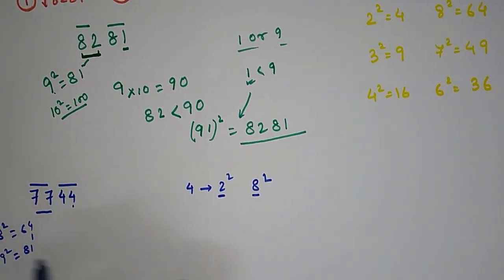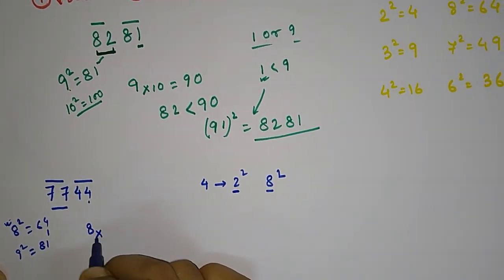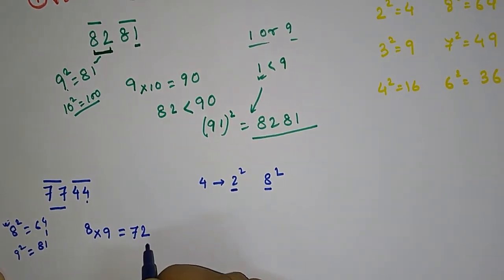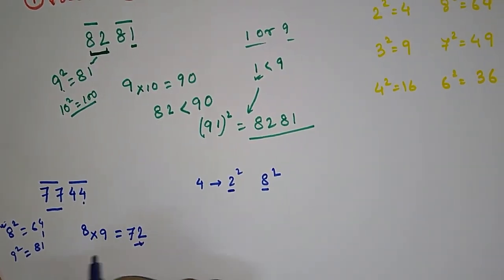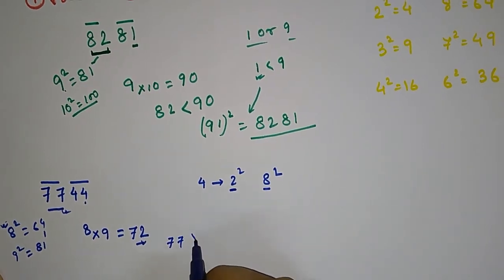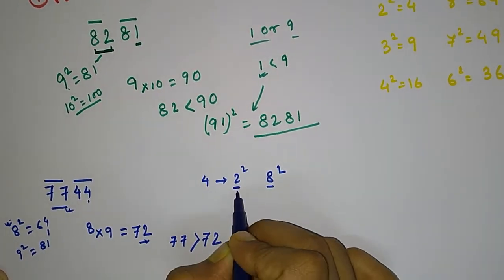Now we have to compare this product with 77. Since 77 is greater than 72, we have to take the larger one from 2 or 8, that is 8.